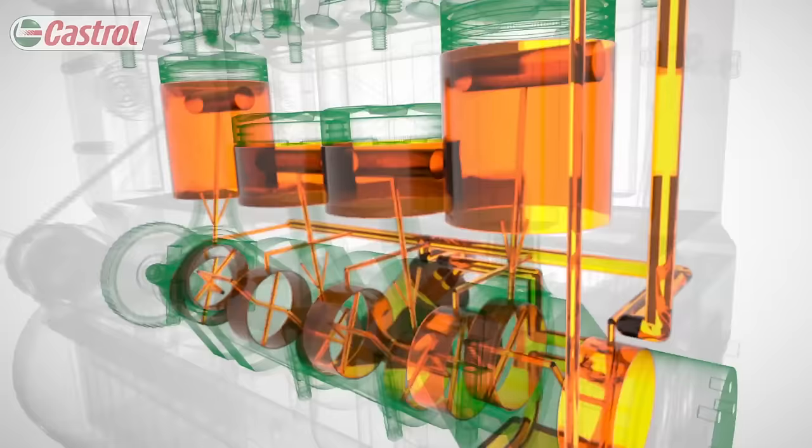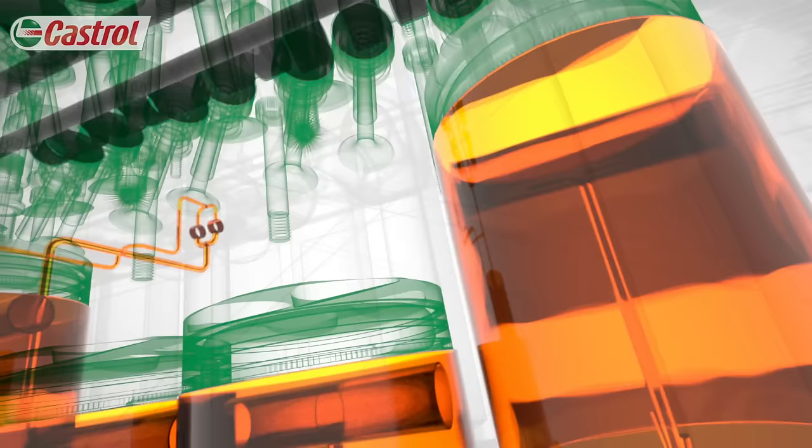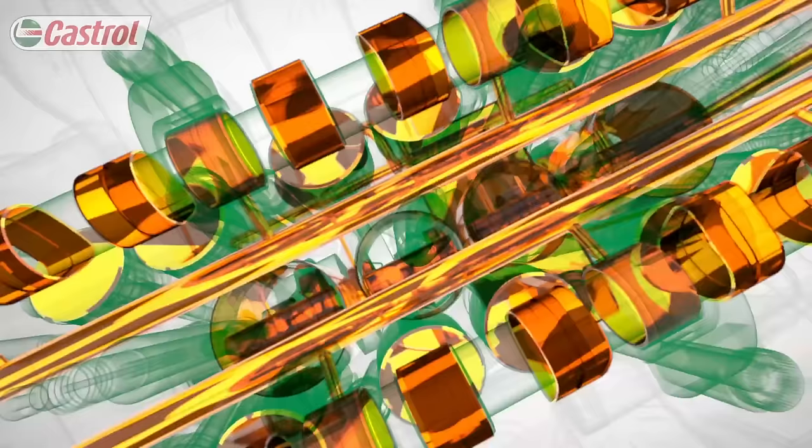The bearings, supporting the crankshaft on a continuous film of oil. Pistons, cooled down and kept clean by the oil's detergent action. And the valve train, protected by the oil's anti-wear system.